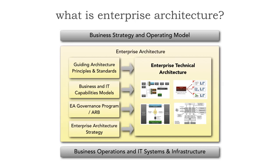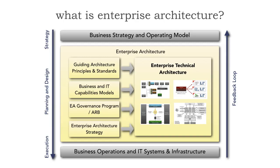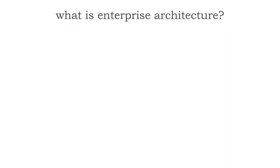We're not quite done, because what we have is really strategy at the operating and business strategy model, planning and design all the way down to execution. Enterprise architecture is really that planning and design, and then there's the feedback loop going up. Let's try to simplify this a little bit to really gain a context of enterprise architecture.